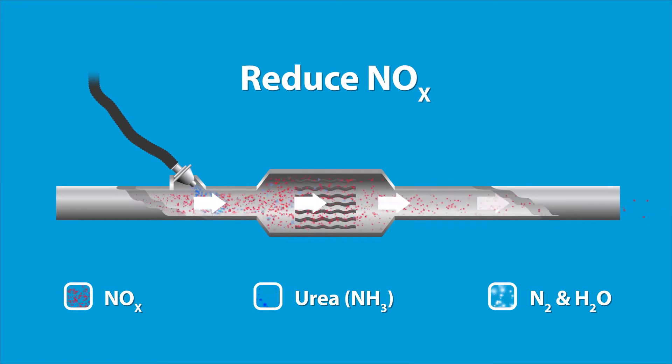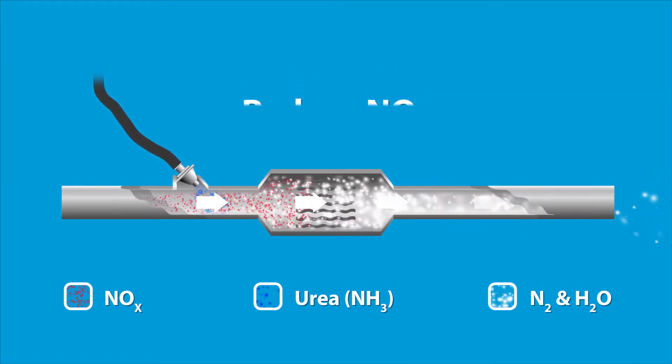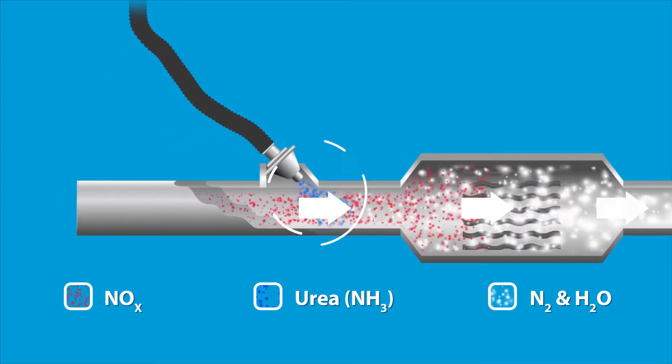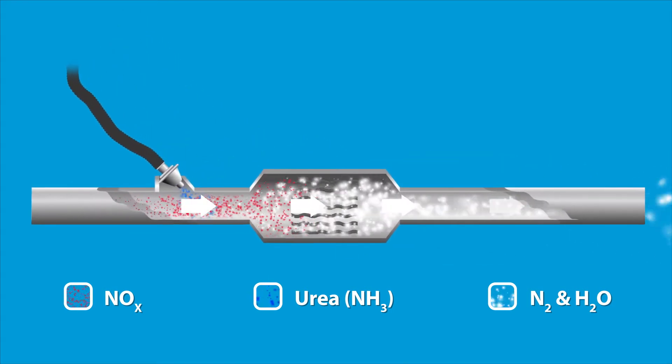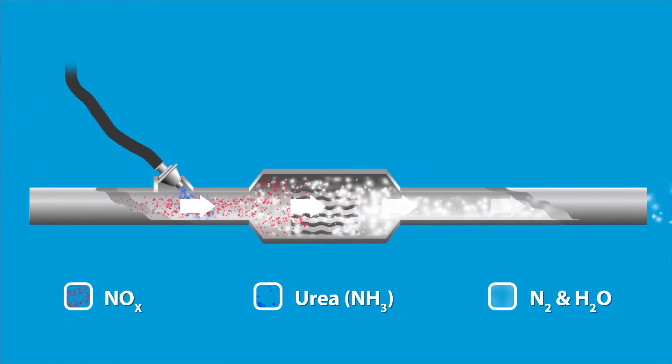It's called selective because it specifically acts on NOx. The system injects diesel exhaust fluid, or DEF, into the exhaust stream of the diesel engine. Through a special catalyst, toxic NOx gases are converted into harmless nitrogen and water.